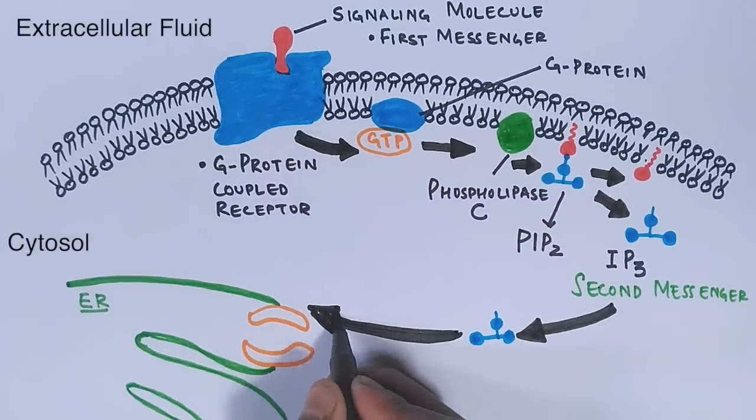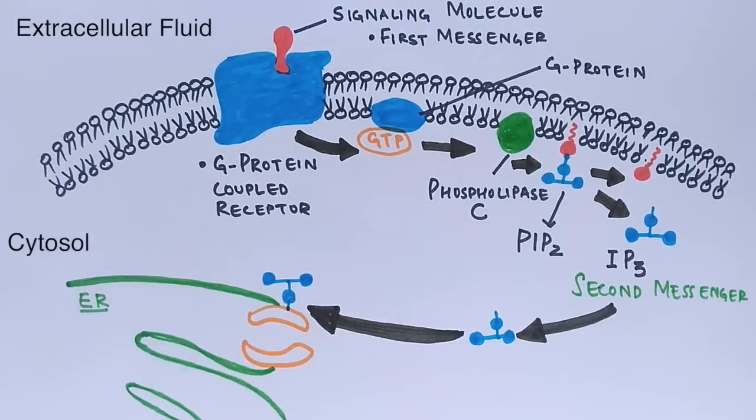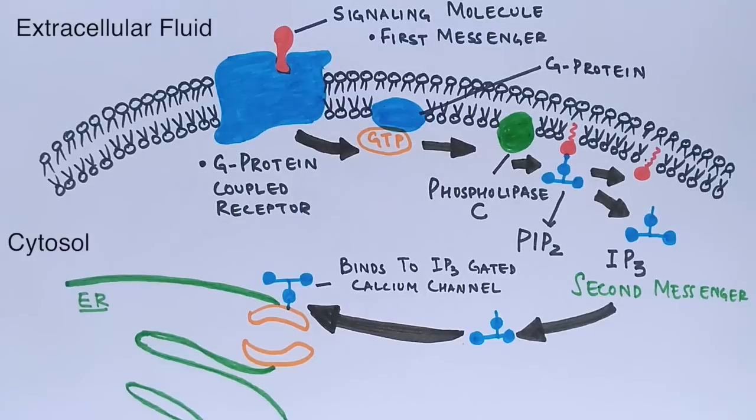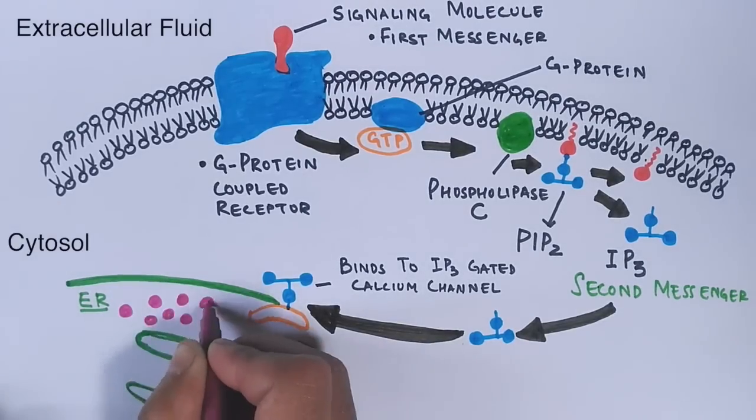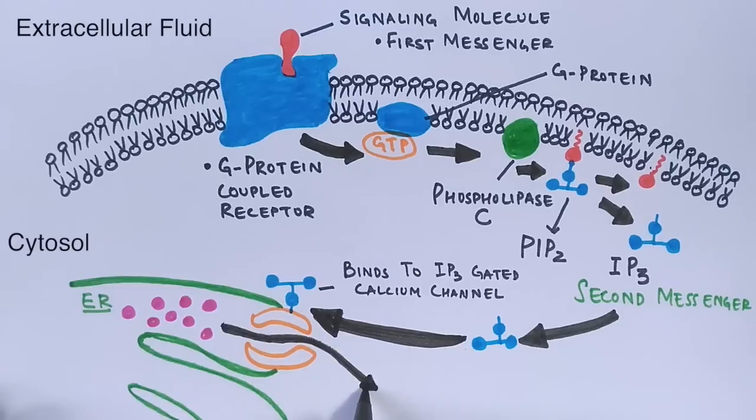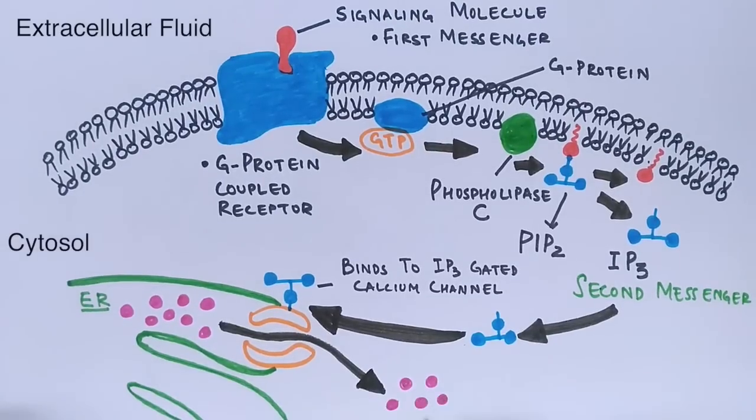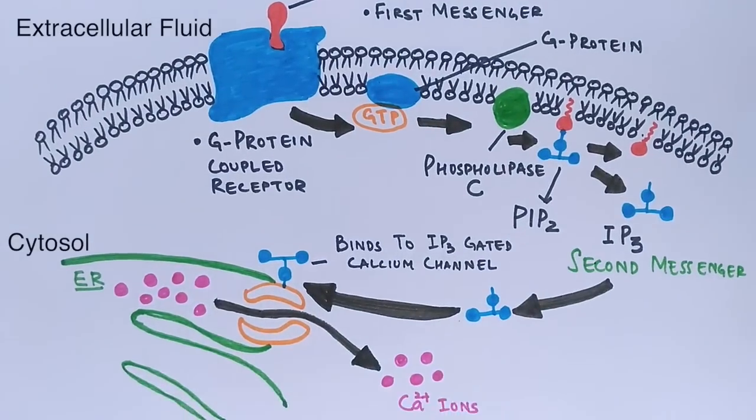IP3 quickly diffuses through the cytosol and binds to an IP3 gated calcium channel in the endoplasmic reticulum membrane, causing it to open. Calcium ions flow out of the endoplasmic reticulum down their concentration gradient, raising the calcium level in the cytosol.